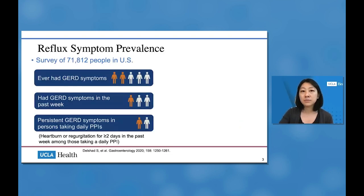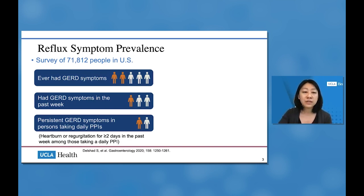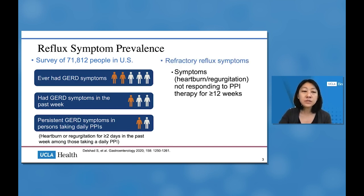Reflux symptoms are very prevalent in our practice. In a recent survey of 72,000 people in the US, two out of five people had some sort of reflux symptoms — heartburn or regurgitation. One out of three had reflux symptoms in the past week, and one out of two people taking daily acid-suppressing medications had persistent heartburn or regurgitation for at least two days in the past week. We define refractory reflux symptoms as heartburn or regurgitation not responding to PPI therapy for at least 12 weeks.